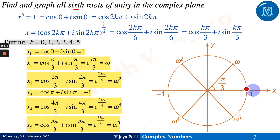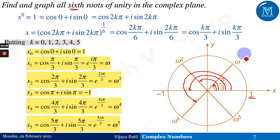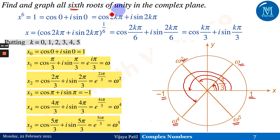If you plot these on the complex plane, with the real axis and imaginary axis, the angle between consecutive roots is π/3. Going around: the first root is 1, then ω at angle π/3, then ω² at 2π/3, then −1, then ω⁴, and finally ω⁵. These are the six roots of unity corresponding to x⁶ − 1 = 0.